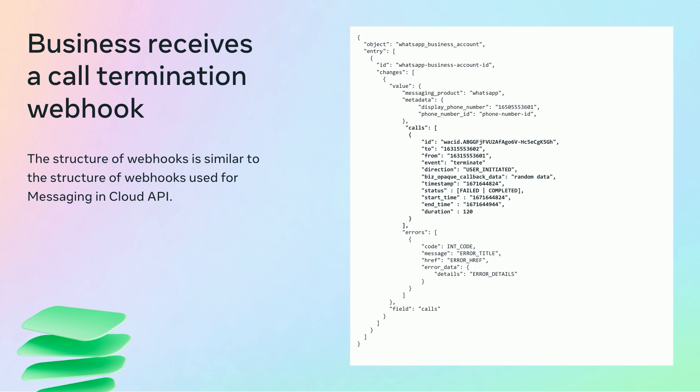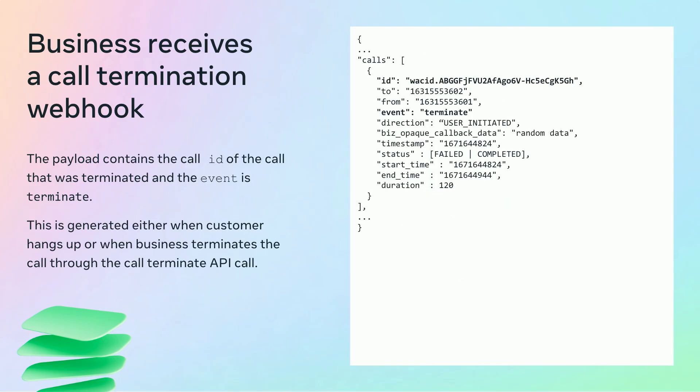Once the call is terminated either by the user or by the business, the business will receive a call termination webhook, similar to the one for user-initiated calls. The calls object will contain the call_id and the event will be set as terminate. This step completes the process for businesses to call their customers.